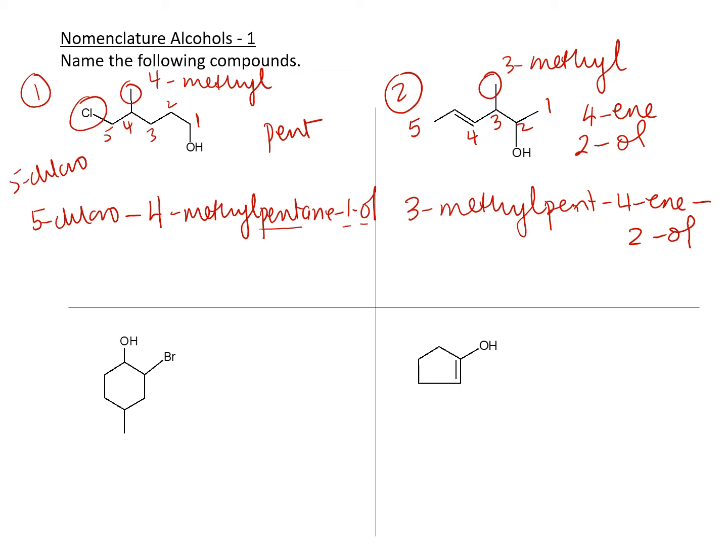Priority means you have to end with that. Number 3. Here in a cyclic compound, again, alcohols take priority, so you number from there.